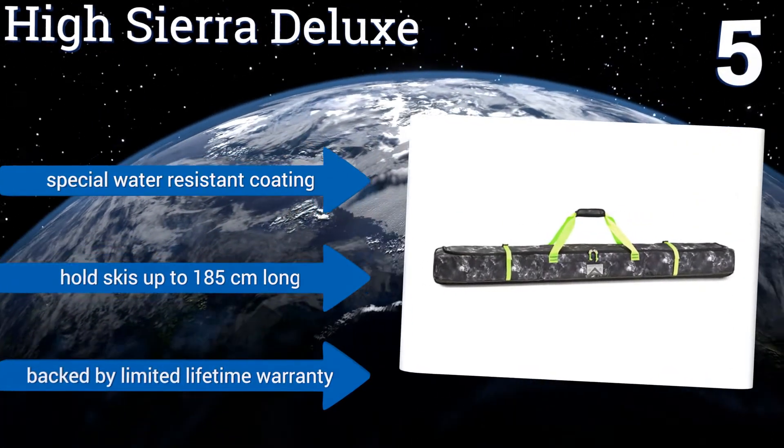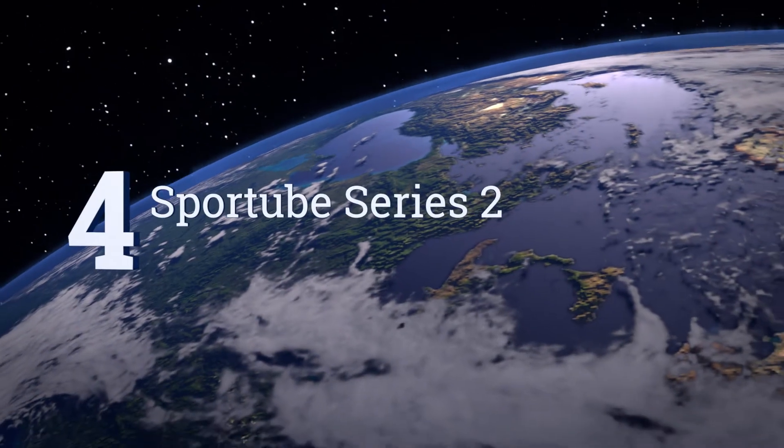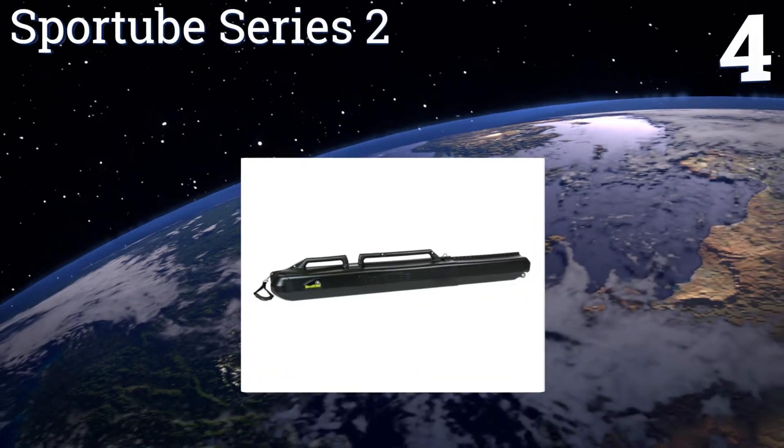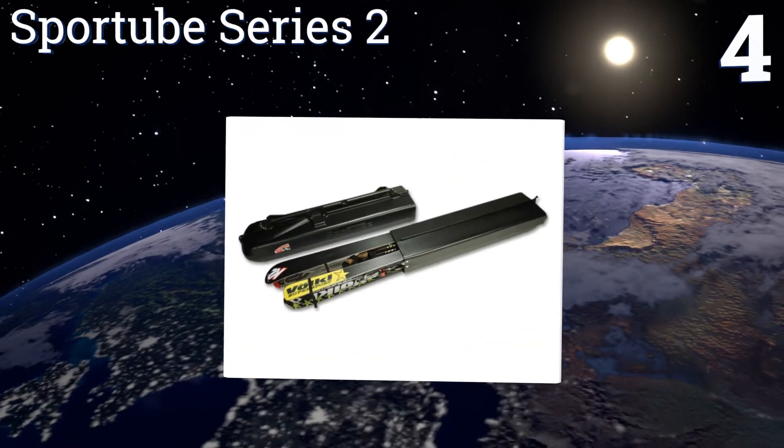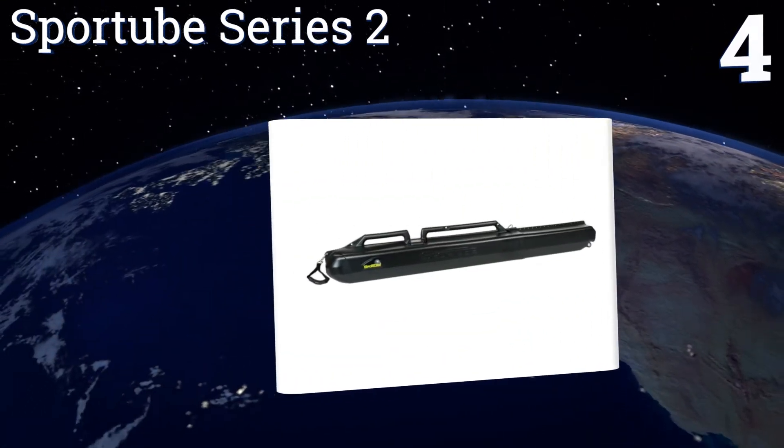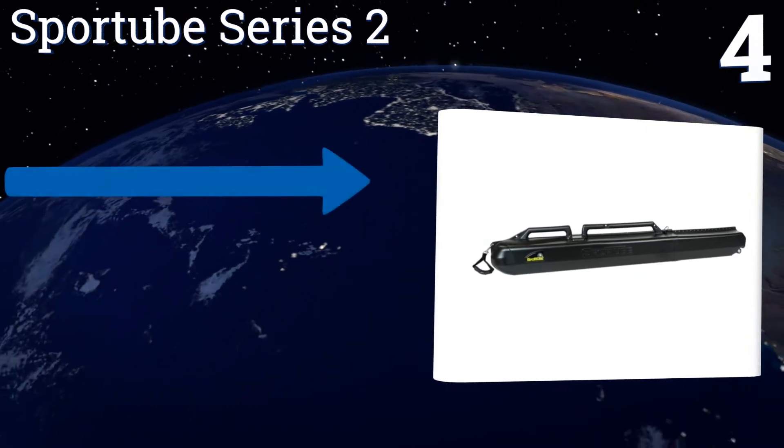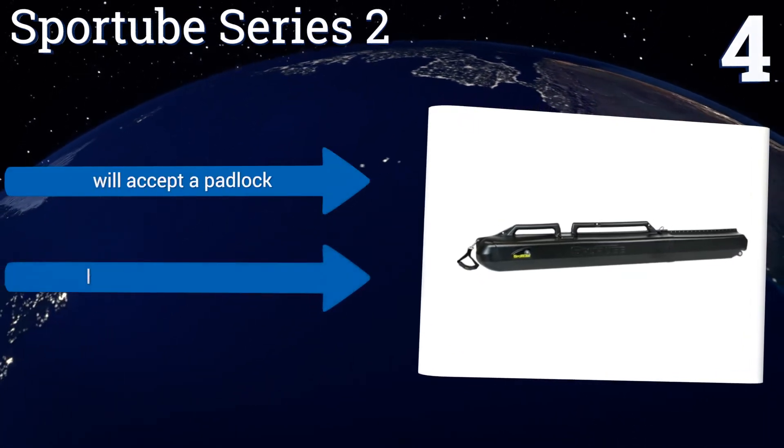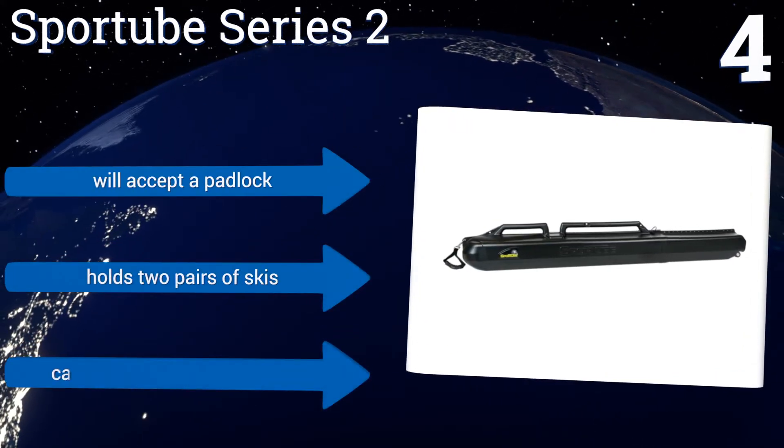It's backed by a limited lifetime warranty. At number four, for the ultimate gear protection, there's hardly a better option than the Sport Tube Series 2. It may be a little heavier and bulkier than soft shell models, but the hard plastic exterior all but guarantees your equipment makes it to the mountain safe and secure. It will accept a padlock and can hold two pairs of skis and can carry other sports gear too.